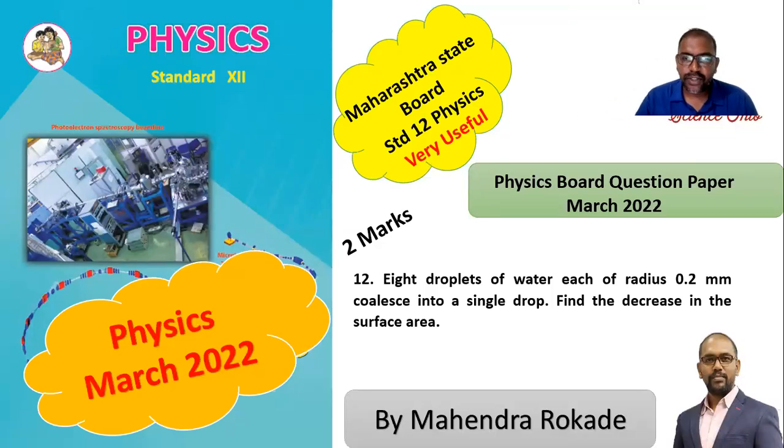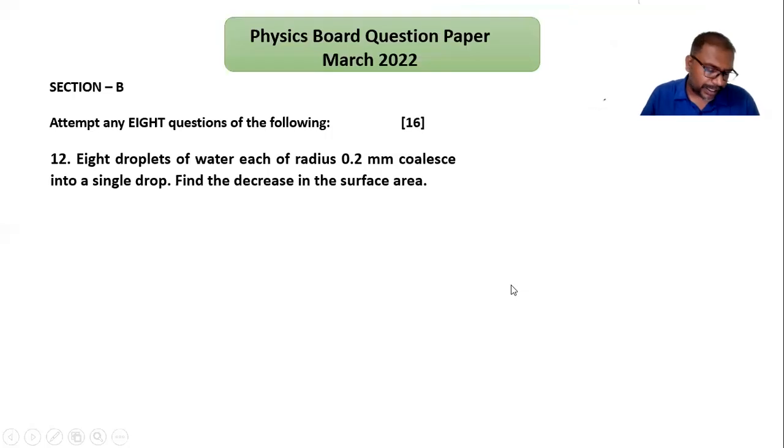A next question from March 2022: eight droplets of water each of radius 0.2 mm coalesce into a single drop. Find the decrease in surface area. So let's see the solution of this problem.